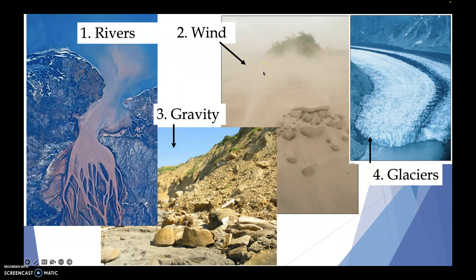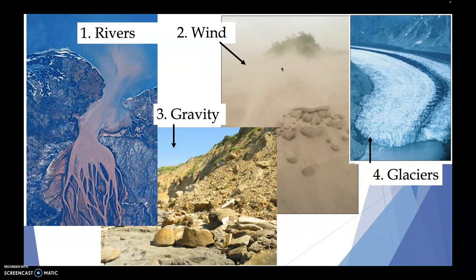Wind is also an extremely good mover of dust and finer sediments. We oftentimes see huge dust blooms off of big deserts like the Sahara Desert in northern Africa. Those are blown over into the Atlantic Ocean and actually settle onto the surface, which ends up being good nutrients for phytoplankton. But we'll talk more about that later. Wind is also a really good eroder as well.